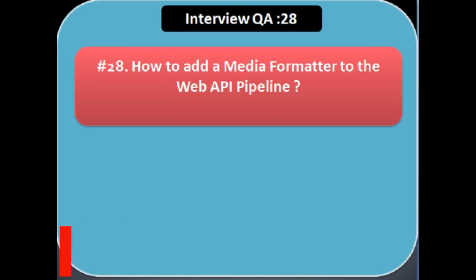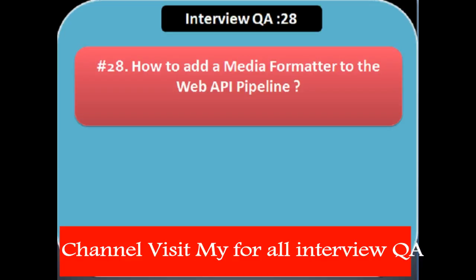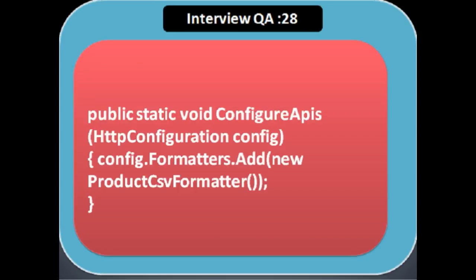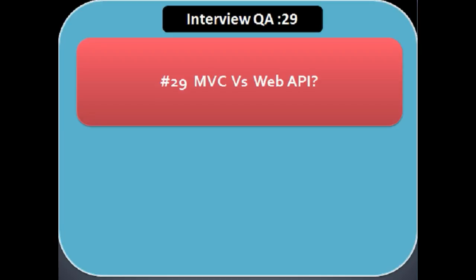Next question: how to add a media formatter to the Web API pipeline. To add a media type formatter to the Web API pipeline, use the Formatters property on the HttpConfiguration object. For example, we create the config object and set it like: config.Formatters.Add(new ProductCsvFormatter()).